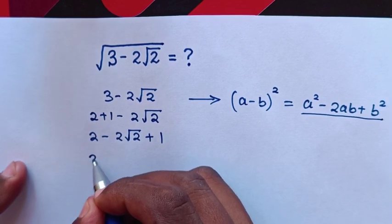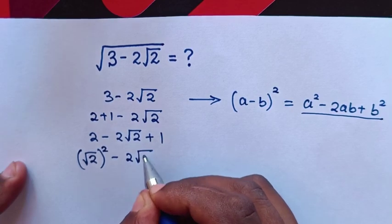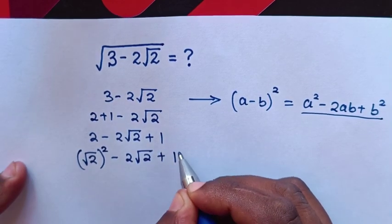it will be square root of 2 bracket square minus 2 square root of 2 plus 1 into square is 1 square.